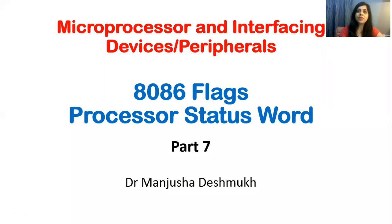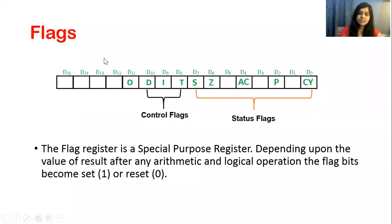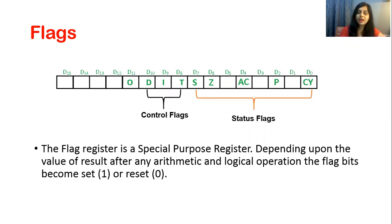Hello everyone. In this video on microprocessor and interfacing devices, I am explaining 8086 flags, which is also known as processor status word. It is known as processor status word because it shows us the status of the microprocessor after arithmetic and logical operations, and hence the name is status word.